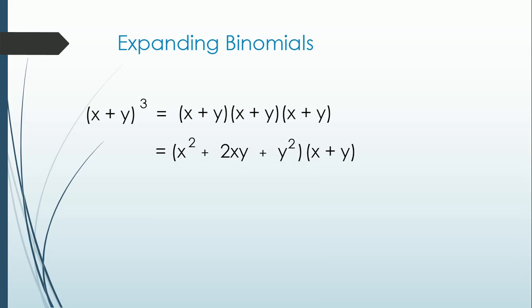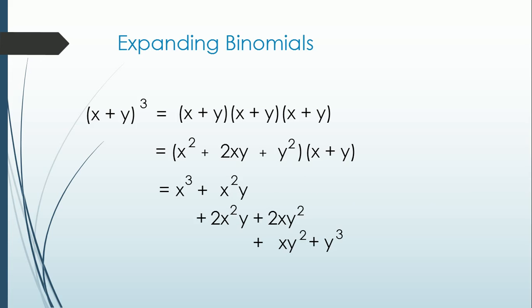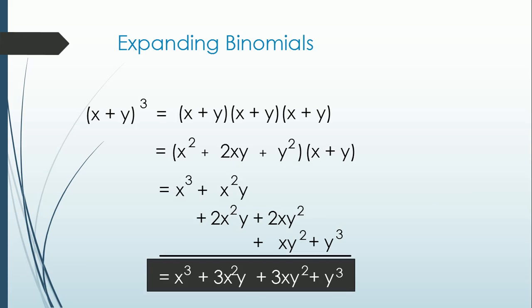To solve this, multiply each term of the first polynomial to each term of the binomial, then combine similar terms. And the answer would be x cubed plus 3x squared y...